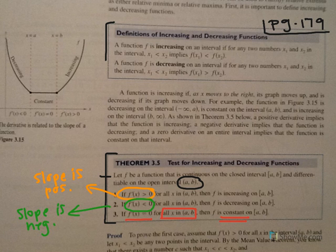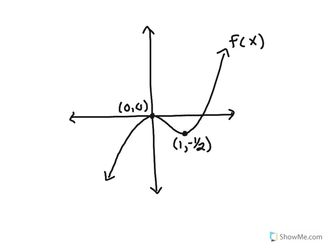Let's look at an example — this is Figure 3.16 on page 180. We want to find the intervals on which f is increasing or decreasing. I like using colors: I'll denote increasing parts in blue and decreasing parts in red, using the definitions I just covered. I'll find the increasing parts first — that's where all slopes are positive — and just estimate based on the graph.